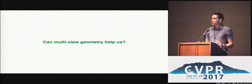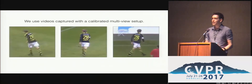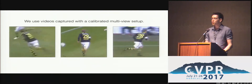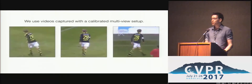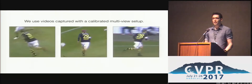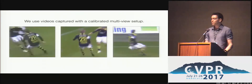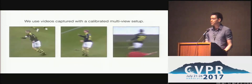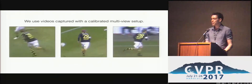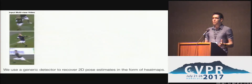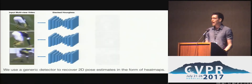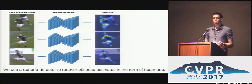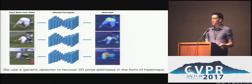In this work, we propose an approach to automatically produce 3D human pose annotations by harvesting multiple camera views. The input of our approach is a set of videos captured from a calibrated multi-view setup. The first step is to use a state-of-the-art component, like the stacked hourglass network, to produce 2D pose estimates in the form of heatmaps.